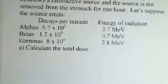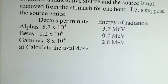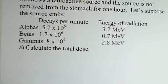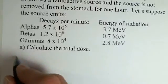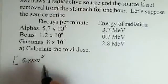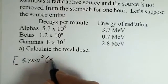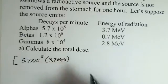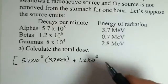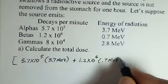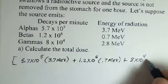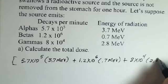We want to calculate the absorbed dose for each radiation type. We have 5.7×10⁵ alphas per minute, each delivering 3.7 MeV to the body. Then 1.2×10⁶ betas per minute, each delivering 0.7 MeV to the body. And 8×10⁴ gammas per minute, each delivering 2.8 MeV to the body.